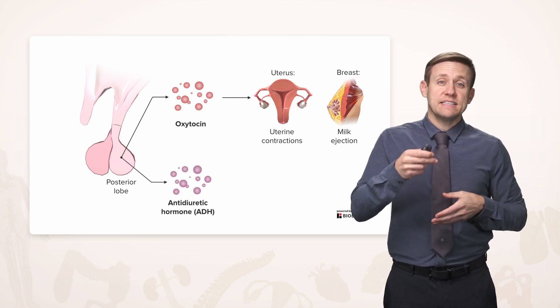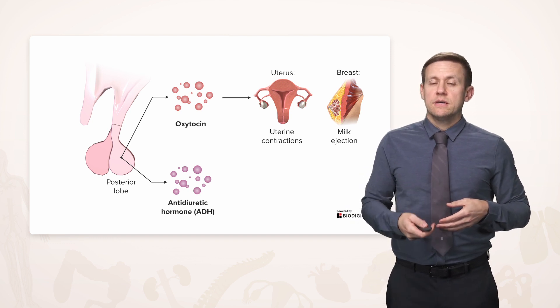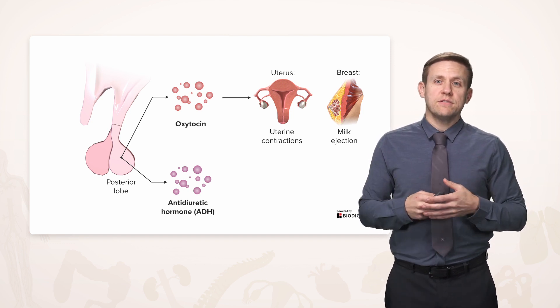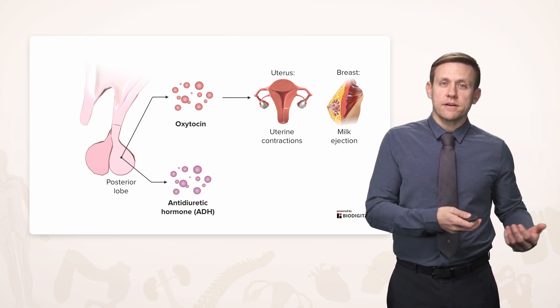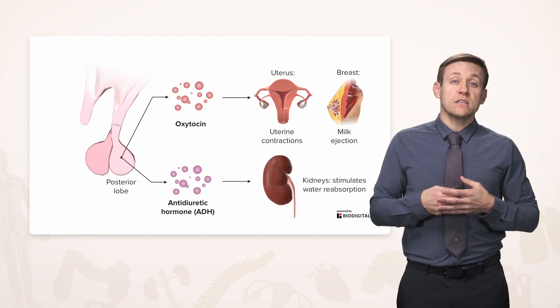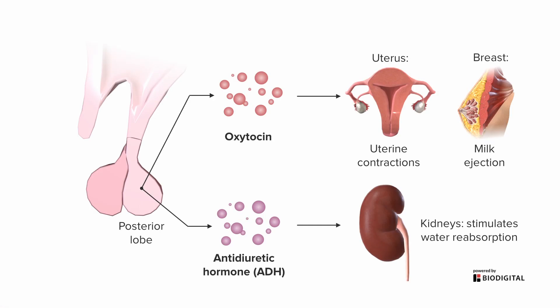Anti-diuretic hormone is also very descriptive. If you know that diuretic means to lose water, then anti-diuretic is going to have an effect that prevents the losing of water. ADH is going to act on the kidneys, in particular an area called the collecting duct, and help stimulate reabsorption from the filtrate back into the bloodstream. This is the sort of hormone that would be secreted when you're very hot or in a dry area and you want to hold on to as much water as possible.